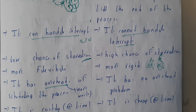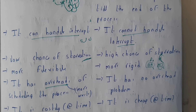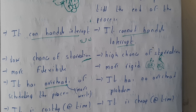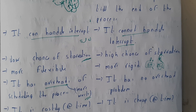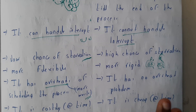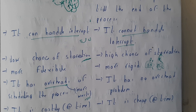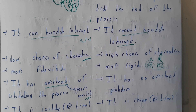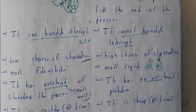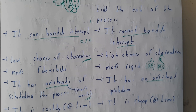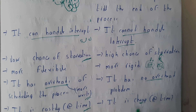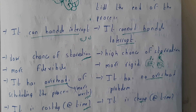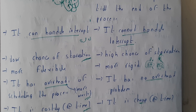In preemptive scheduling there is overhead — whenever a new process comes, the CPU must decide whether to swap, store the current process state, and switch, which is a burden. That is overhead. In non-preemptive, whatever happens it executes in order, so there are very few chances of overhead. Preemptive is also costly in terms of time, whereas non-preemptive is cheaper.